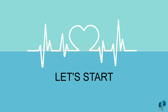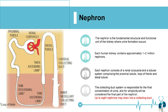Let's start. The nephron is the structural and functional unit of the kidney where urine formation occurs. The kidney consists of approximately 1 to 2 million nephrons. Each nephron consists of a renal capsule and a tubular system including proximal tubules, loop of Henle, and distal tubules. The collecting system is responsible for the final concentration of urine.